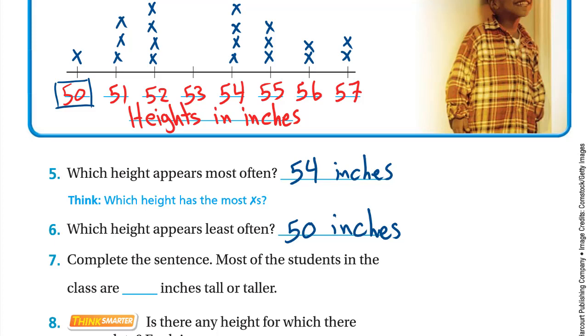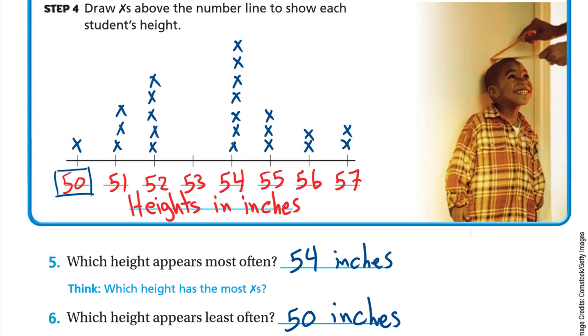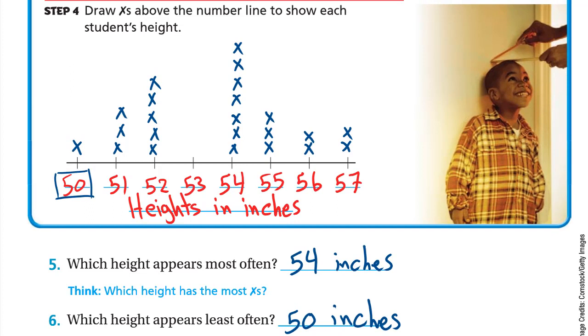Number seven: Complete the sentence. Most of the students in the class are how many inches tall or taller? As you can see, the numbers here from 50 to 53 are less than from 54 to 57. So most of the class is 54 inches or taller.